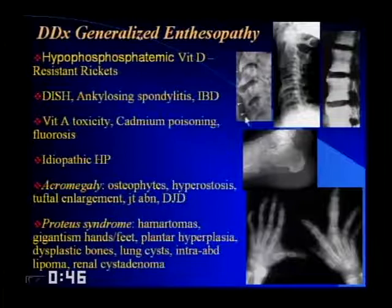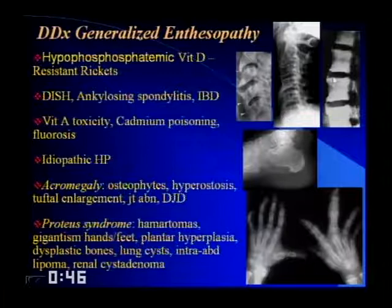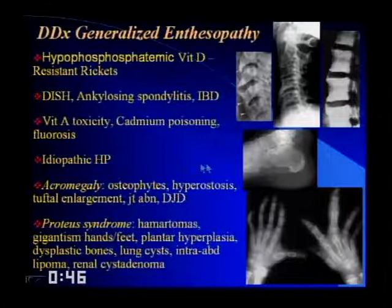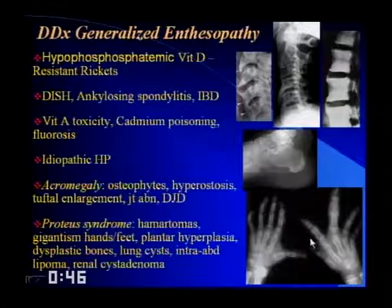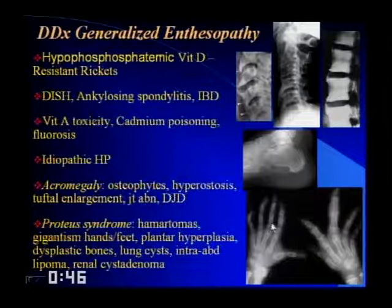Other causes of generalized enthesopathy include fluorosis, hypoparathyroidism, pseudo-hypoparathyroidism, and acromegaly — where you see a thick heel pad and enthesopathic changes at the Achilles and plantar aponeurosis insertion. Proteus syndrome — thought by many to be what the elephant man had rather than neurofibromatosis — involves hamartomas and localized gigantism in the hands and feet, with numerous associated abnormalities.